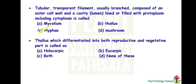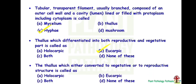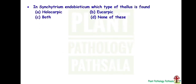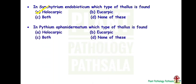Thallus which is differentiated into both reproductive and vegetative parts is called as? Answer is B — Eucarpic. Then, thallus which is either converted entirely to vegetative or to reproductive structure is called as? Answer is A — Holocarpic thallus. Next: in Synchytrium endobioticum, which type of thallus is found? Answer is Holocarpic thallus, that is A. Next: in Pythium apanidermatum, which type of thallus is found? Answer is B — Eucarpic thallus.